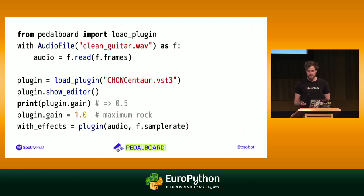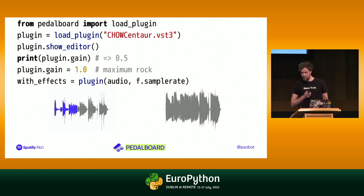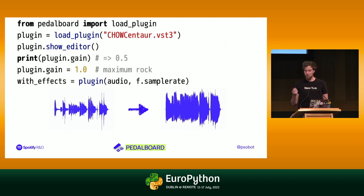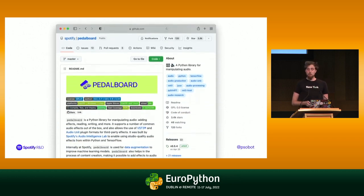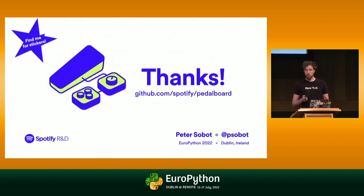Here's the before and after one last time... and afterwards — we couldn't have written that in Python. We're just using someone else's code for it, and it sounds pretty good. With that, I'm out of time. If you're interested in using Pedalboard, you can find it on GitHub at github.com/spotify/pedalboard, or just on PyPI — pip install pedalboard. Thanks so much for listening! Find me in the hallway for any questions you might have, or for cool stickers of the Pedalboard logo. Thanks, EuroPython.